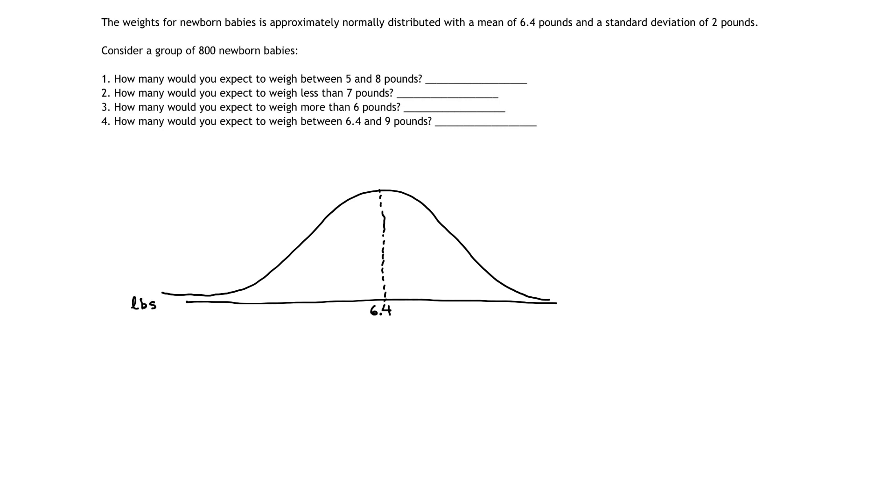I have a standard deviation of 2 pounds. So my mean is 6.4, my standard deviation is 2. Which means if I add 2 pounds to 6.4, that gives me my first standard deviation away, which is 8.4 pounds. And then if I add another 2 pounds, it would be 10.4 pounds, etc.